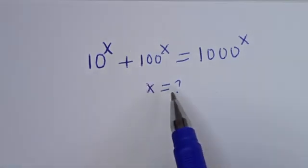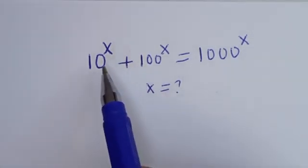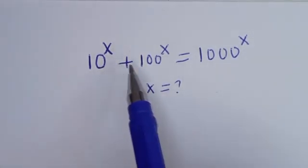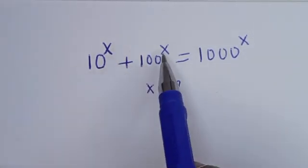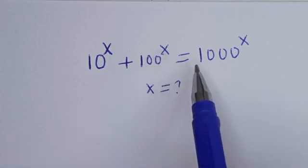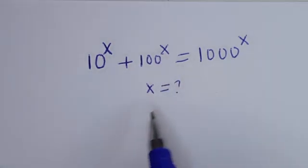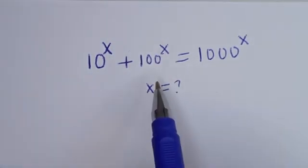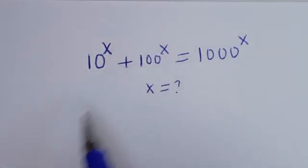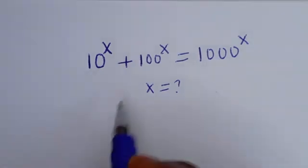Hello. How to solve for S in this equation: 10 to the power of S plus 100 to the power of S is equal to 1000 to the power of S. In this equation, we are going to make use of two methods.